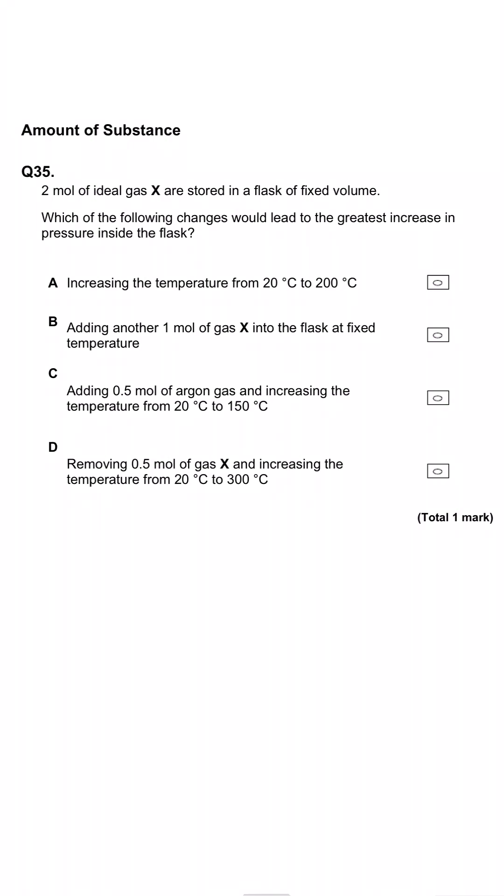Two moles of ideal gas X are stored in a flask of fixed volume. Which of the following changes would lead to the greatest increase in pressure inside the flask? This question is making it look like you have to do eight ideal gas calculations for pressure. You don't, but there's still quite a bit of work to do.